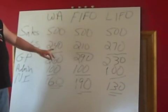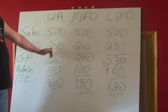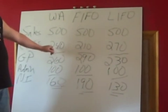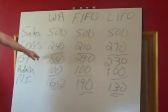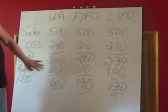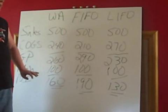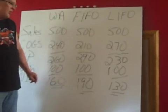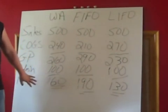Our cost of goods sold — if you remember in our first example — our weighted average was $240. To figure out our gross profit, we take our sales minus our cost of goods sold, which gives us a gross profit of $260. Subtract out our $100 admin expense, and we have net income of $160.